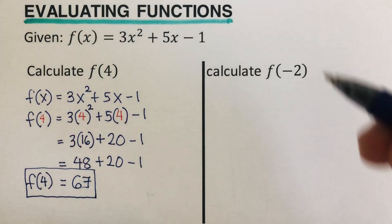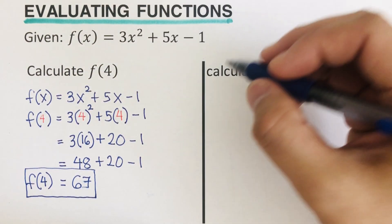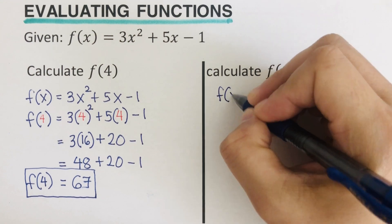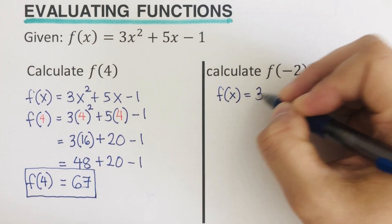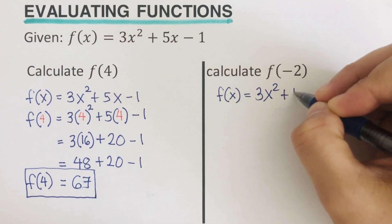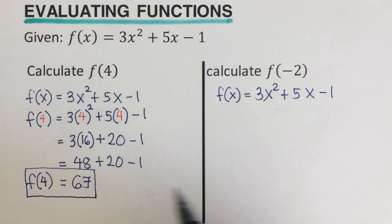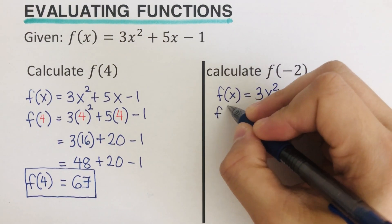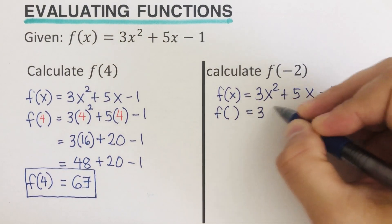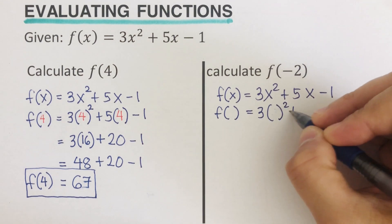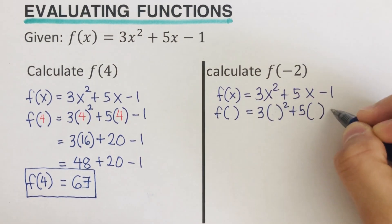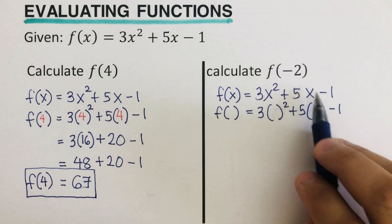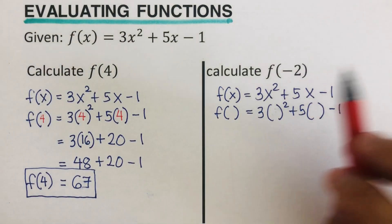Okay, so we go over the problem again. I'm going to rewrite the function: f(x) = 3x² + 5x − 1. In order to evaluate the function, we are supposed to change all the variables into parentheses first, so f( ) = 3( )² + 5( ) − 1.